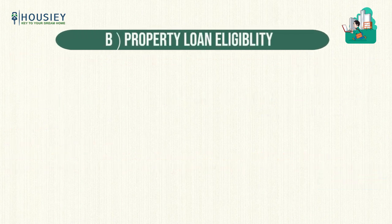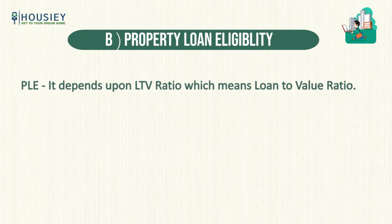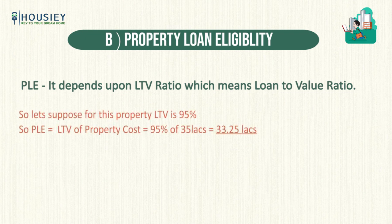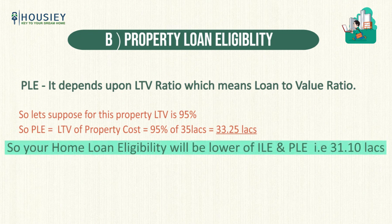The second factor is property loan eligibility — the loan you can get based on the property cost. This depends on the LTV ratio, i.e., Loan to Value ratio — the percentage of the property value the bank will lend. For example, if we consider 95% LTV on ₹35 lakhs, the property loan eligibility is ₹33.25 lakhs. Income loan eligibility is ₹31.11 lakhs and property loan eligibility is ₹33.25 lakhs. The home loan eligibility is the lower of both — so it will be ₹31.11 lakhs.